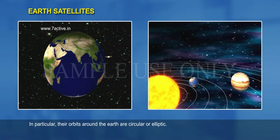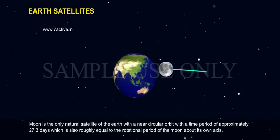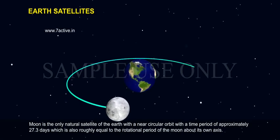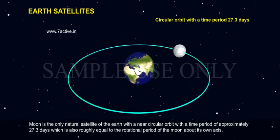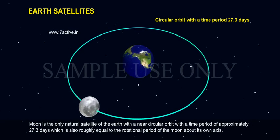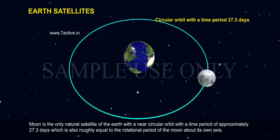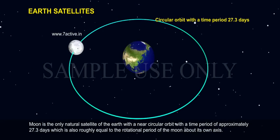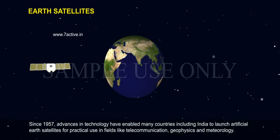In particular, their orbits around the Earth are circular or elliptic. Moon is the only natural satellite of the Earth with a near-circular orbit with a time period of approximately 27.3 days, which is also roughly equal to the rotational period of the Moon about its own axis.